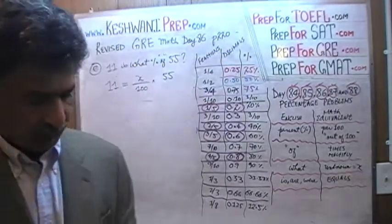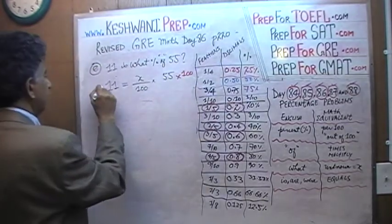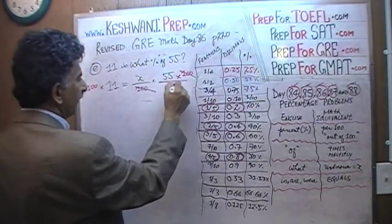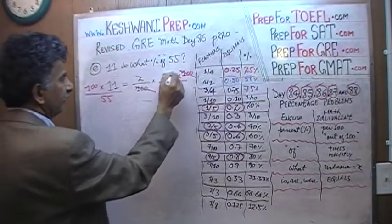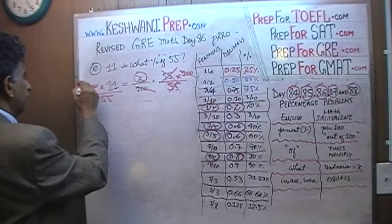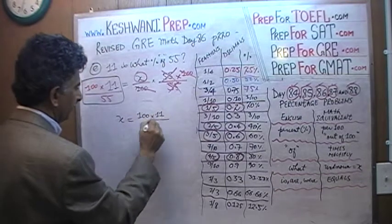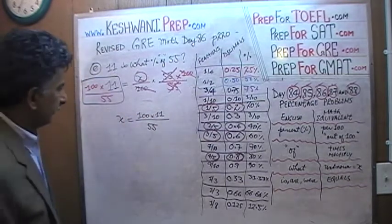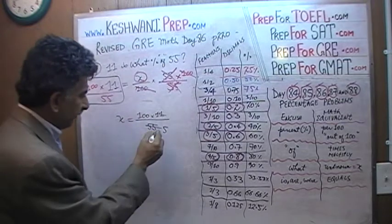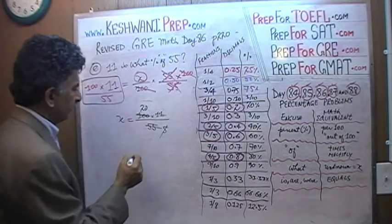Let's solve for X. Multiply both sides of the equation by 100 to eliminate the 100 in the denominator. Then divide both sides by 55. X equals 100 times 11 over 55. How many 11s are in 55? There are five. Divide top and bottom — first by 11, then divide top and bottom by 5. There are twenty-fives in 100, so X equals 20.